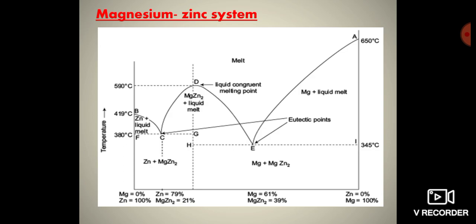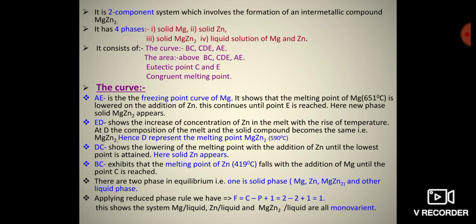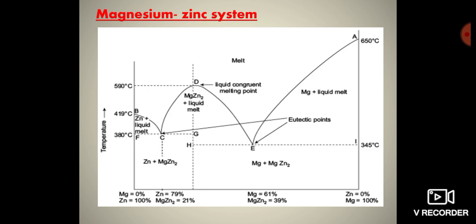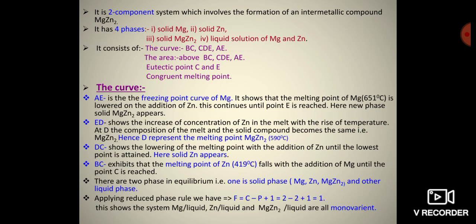The first system is the magnesium-zinc system and the second is the ferric chloride-water system. In the magnesium-zinc system, it is a two component system which involves the formation of an intermetallic compound, that is, MgZn₂. This system has four phases: solid Mg, solid Zn, solid MgZn₂, and liquid solution of Mg and Zn. It consists of three curves — BC, CDE, and AE — and three areas above BC, above CDE, and above AE.